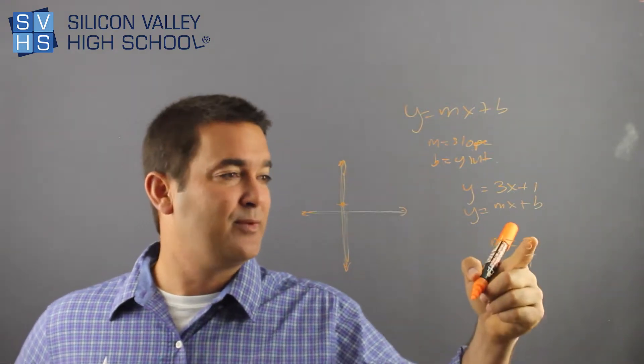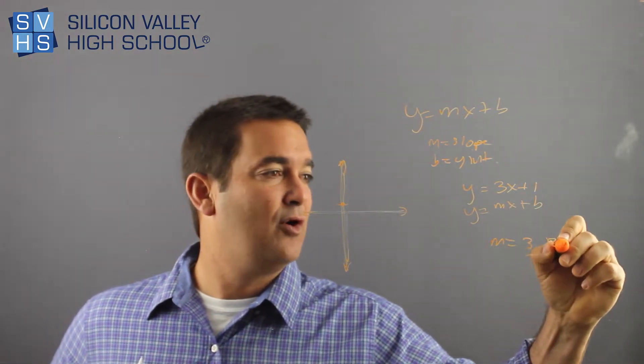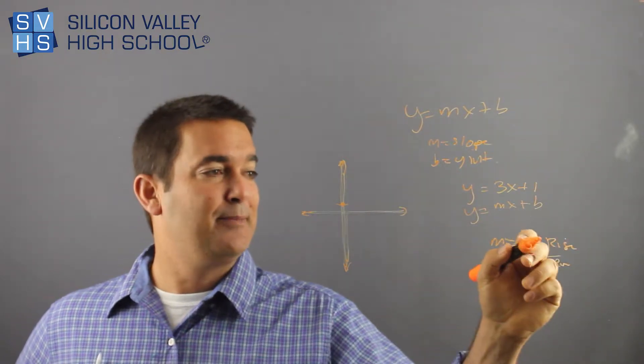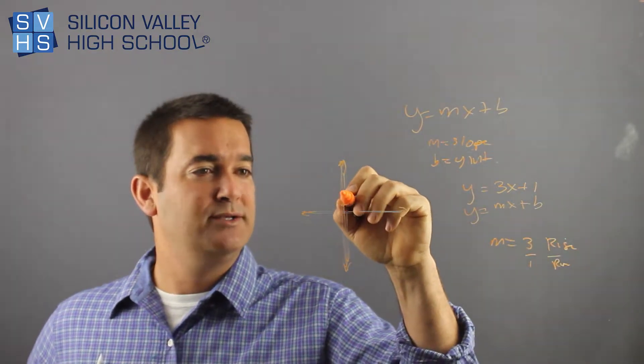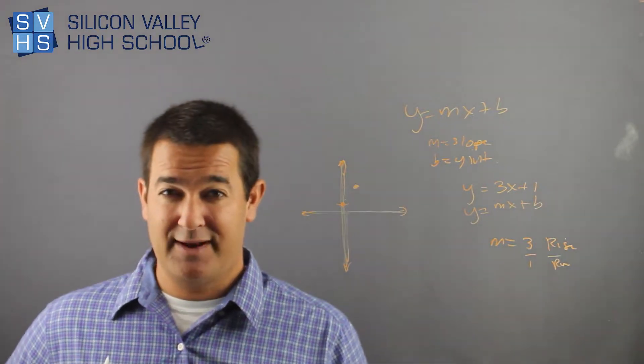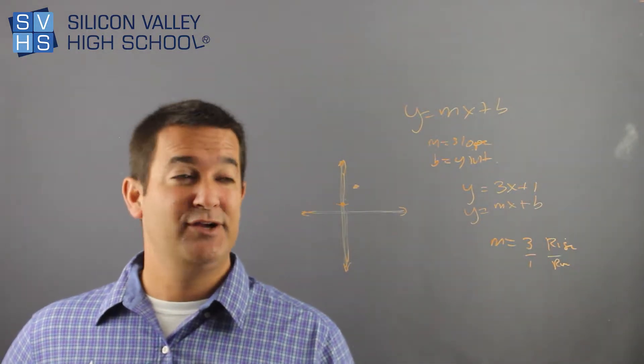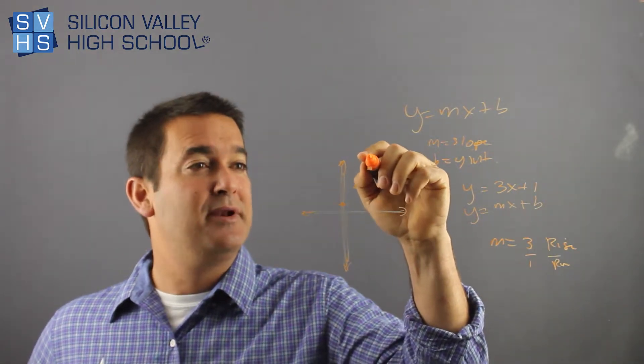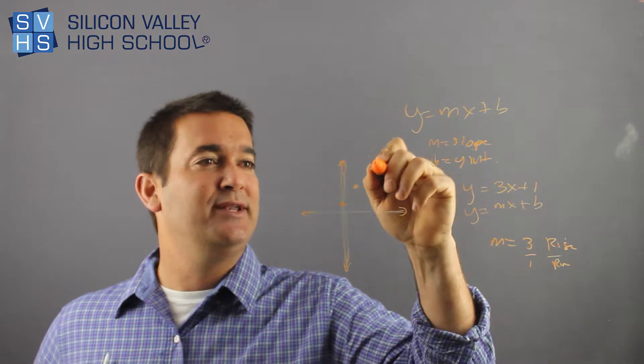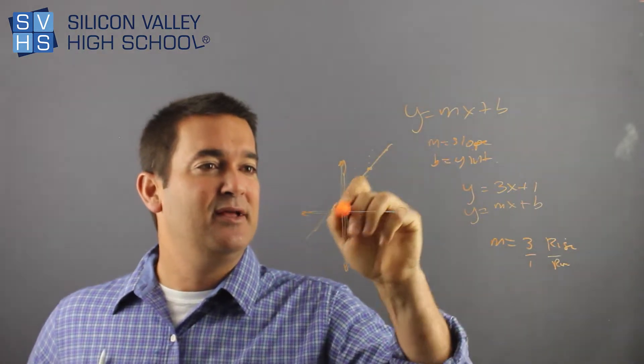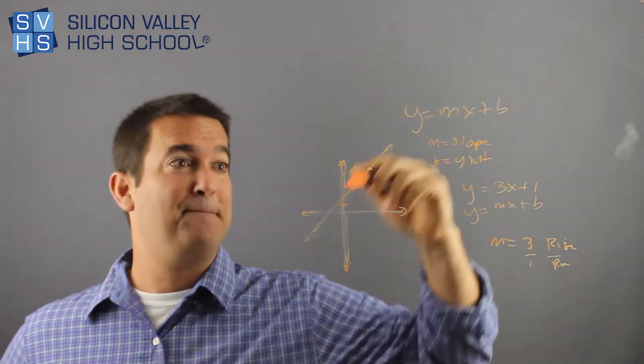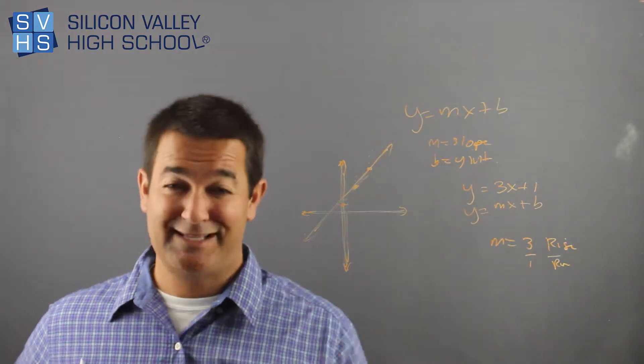So I would go up 3, rise over run is what the nerds say, like me. You'd go up 3 over 1. So I'd go 1, 2, 3, over 1. That's my next point. And if you wanted to be an overachiever, you could do this all day. Up another 3, over another 1. Up another 3, over another 1. Really, you only need 2. But you only need 2 to graph it. But you could, if you think it's fun, you could put a billion points. And they're all going to be on the same exact line.